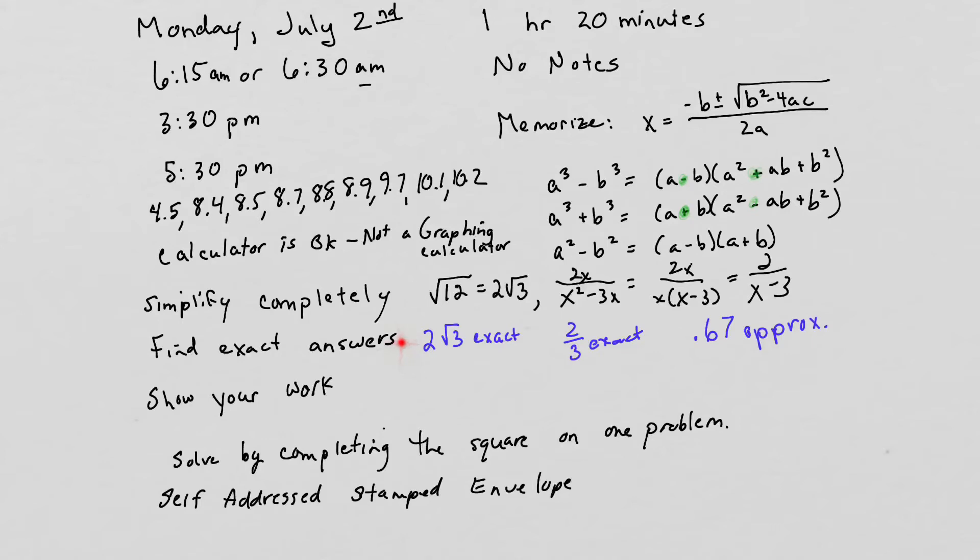The exam will also say find exact answers when possible. For example, 2√3 is the exact answer. If you put that in your calculator and got a decimal, the decimal would be rounded off—it would not be exact. Just like with fractions, 2/3 is exact. However, if you put 2/3 in your calculator, you'd get 0.6667, and then you'd have to round that off. That is not exact—that would be an approximation.